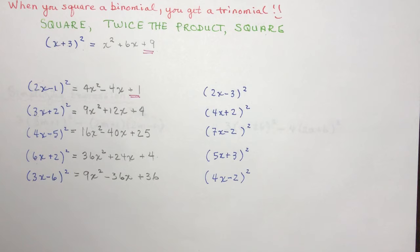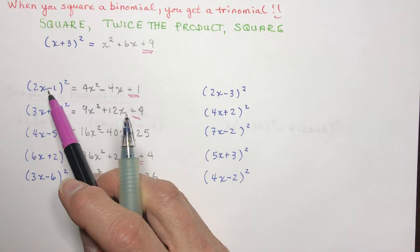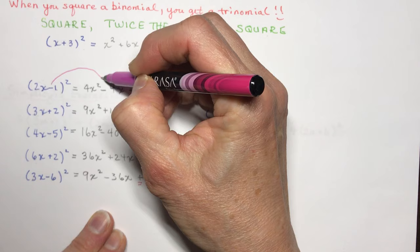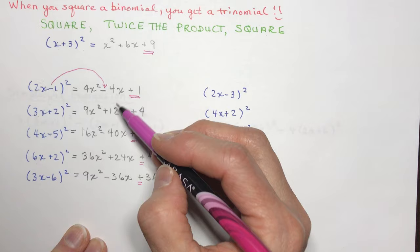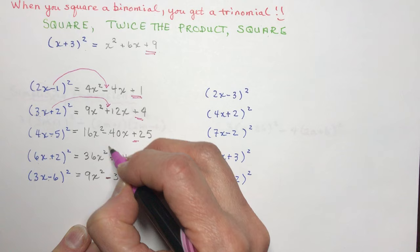For (3x − 6) squared: square the first, 9x squared; product of 3x and −6 is −18, double that is −36x; and −6 squared is +36. Notice all the last terms are positive. Also notice the sign of the middle term follows the sign of the binomial: if the sign between terms is negative, the middle term is negative; if positive, the middle term is positive.